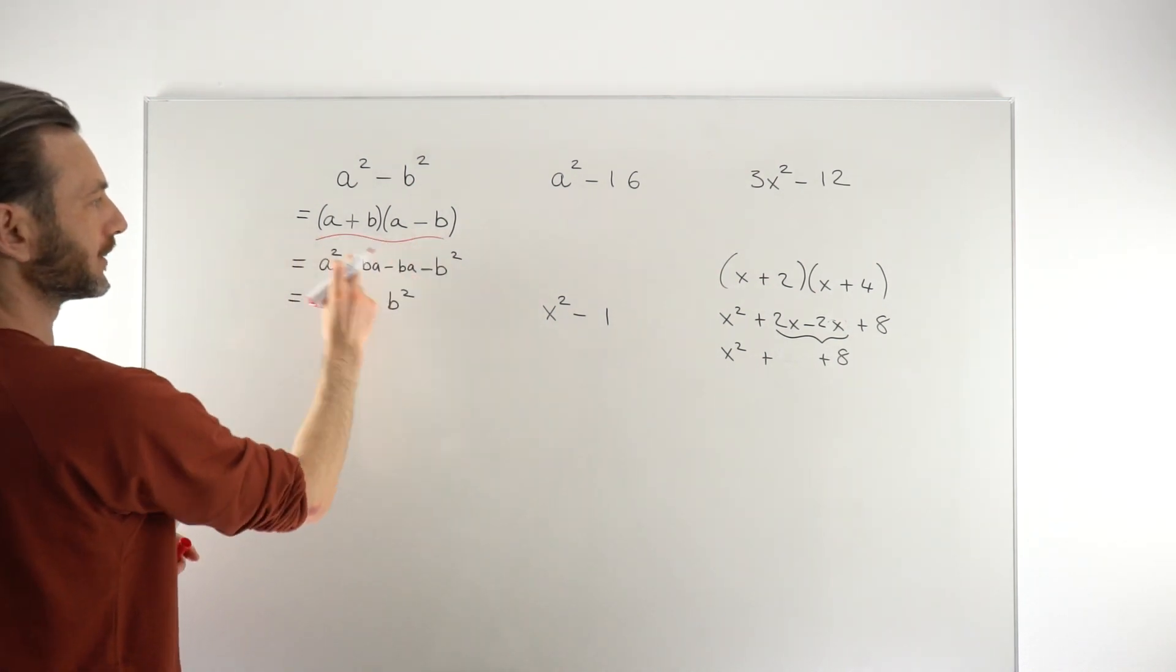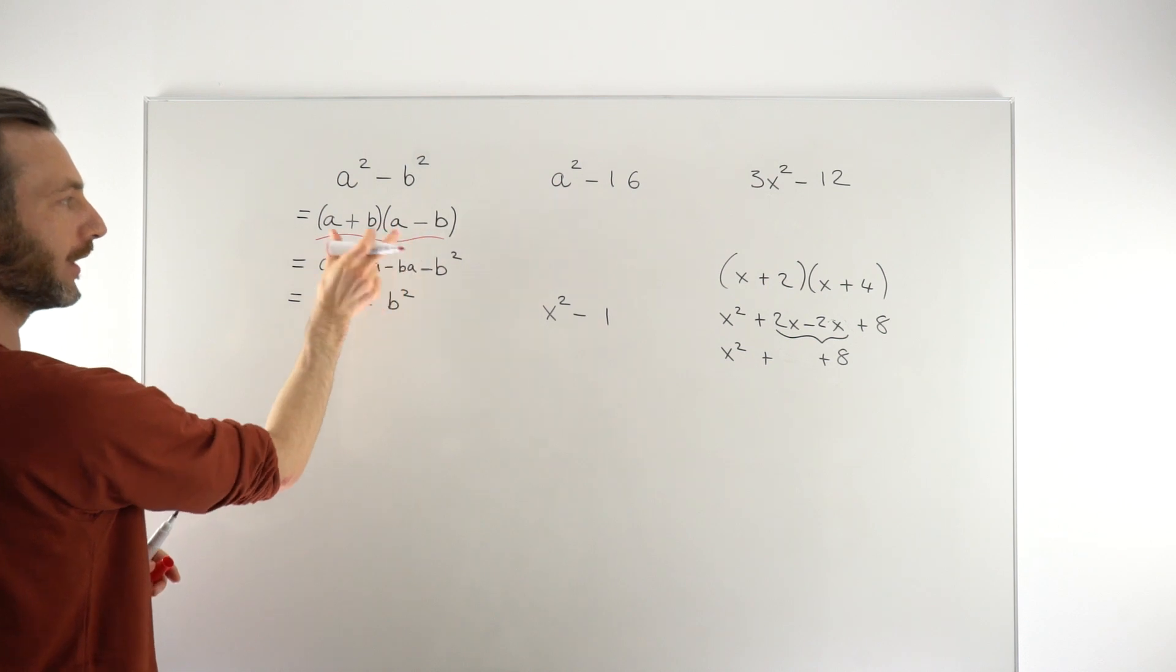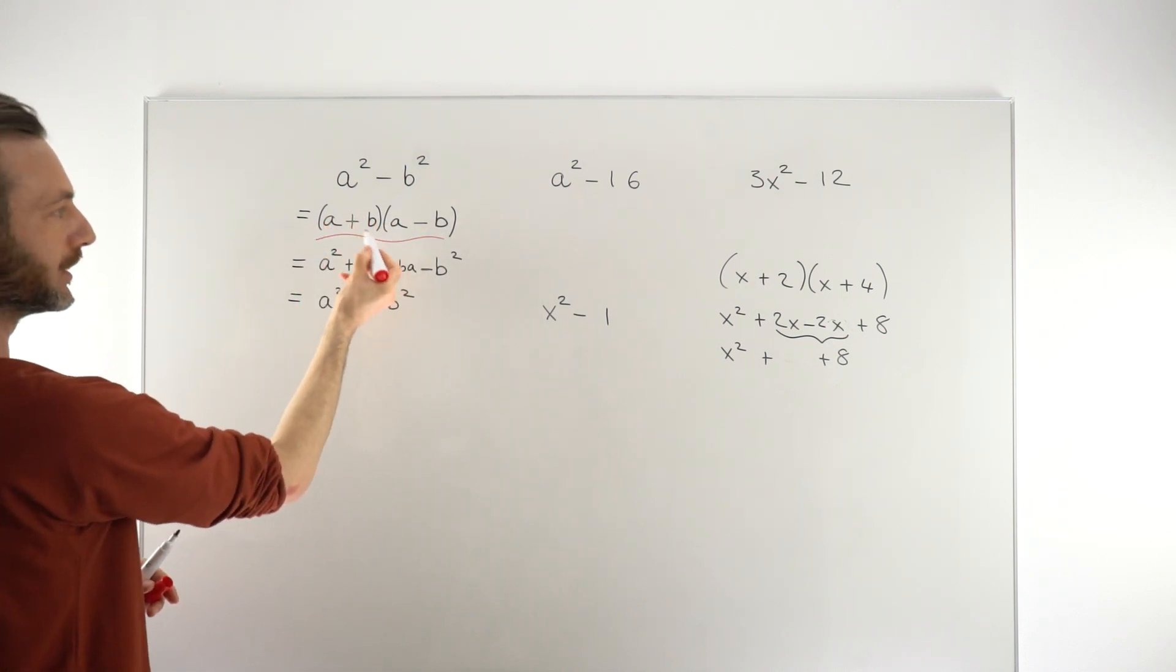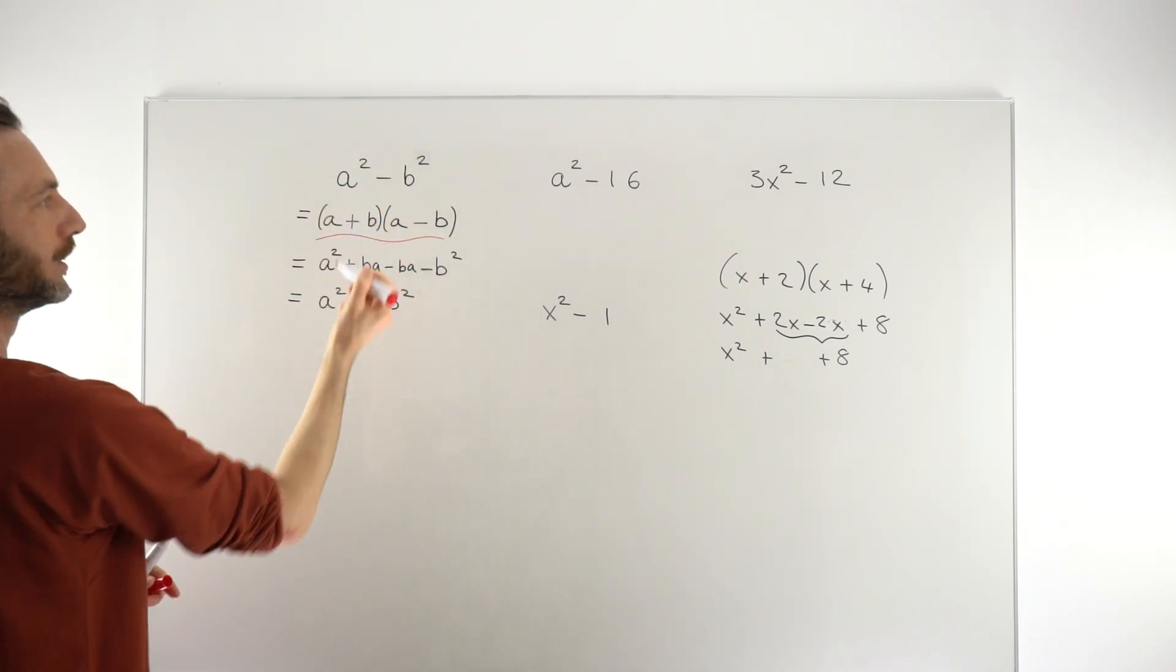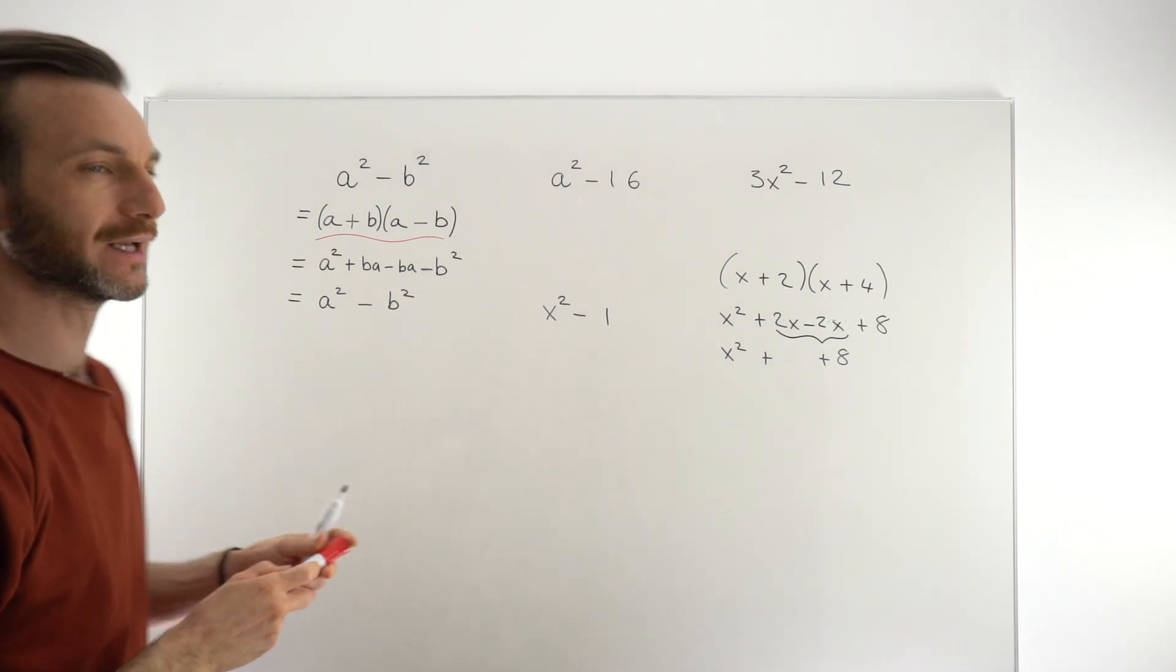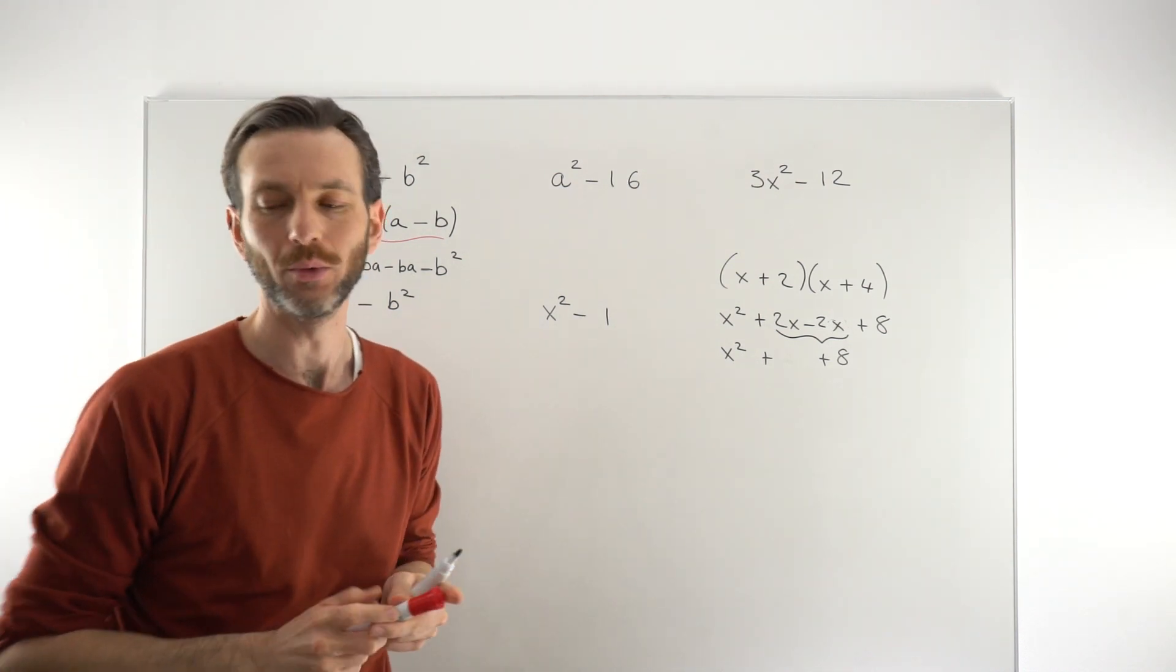Another way you could think about it is that the number that goes here and here or the letter that goes here and here is going to be the square root of this. But usually we can just look at it and tell what it's going to be. It's normally quite straightforward.